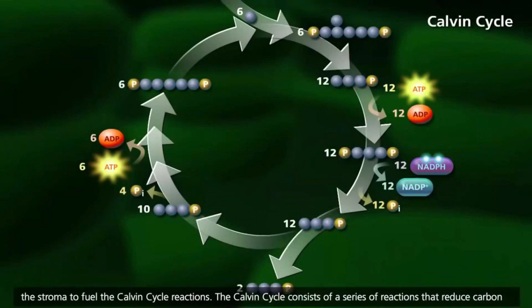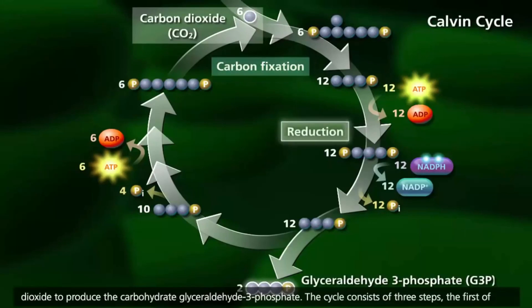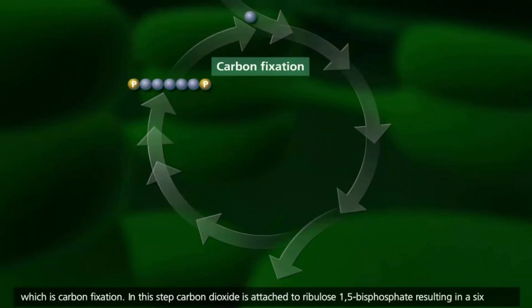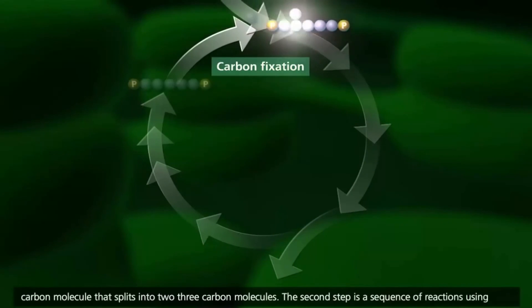The Calvin cycle consists of a series of reactions that reduce carbon dioxide to produce the carbohydrate glyceraldehyde-3-phosphate. The cycle consists of three steps, the first of which is carbon fixation. In this step, carbon dioxide is attached to ribulose-1,5-bisphosphate, resulting in a six-carbon molecule that splits into two three-carbon molecules.